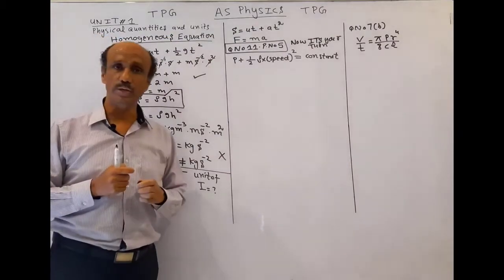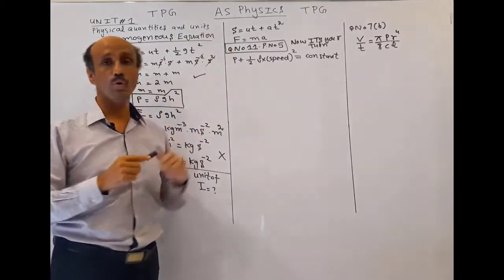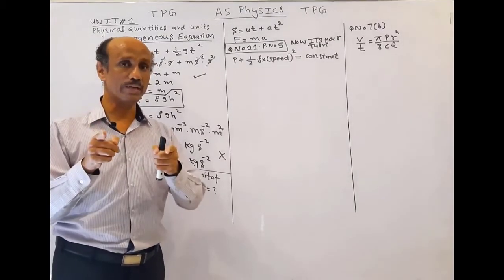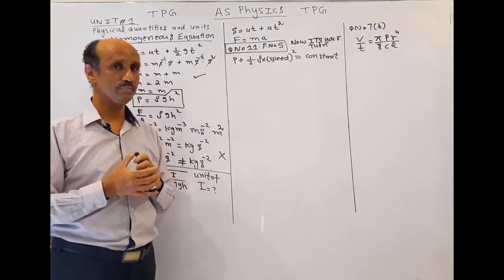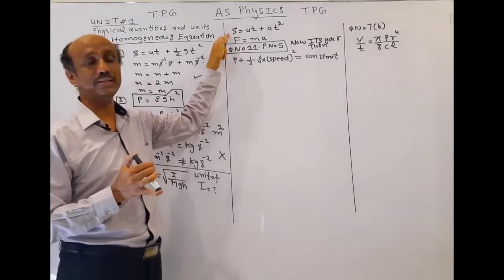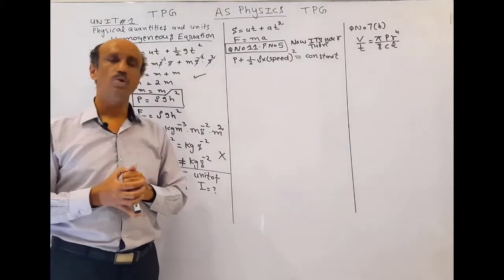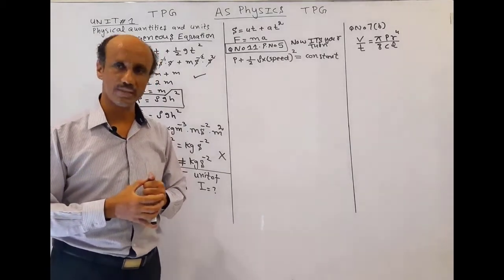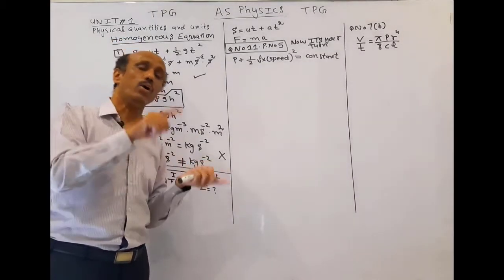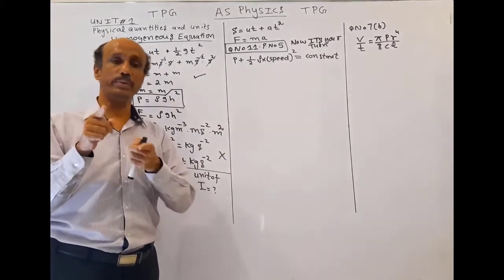The next equation is h = ut + 80t². If you solve that equation you will get that it is a homogeneous equation — the left hand side unit equals the right hand side unit. But this is not a correct equation. So it means that this equation is homogeneous but not correct. This question has been asked in papers: write down an equation which is homogeneous but not the correct equation. So remember: a correct equation is always homogeneous, but a homogeneous equation is not necessarily correct.